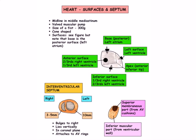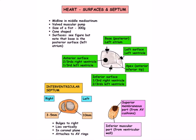The heart is a midline valvular muscular pump which is cone-shaped, about the size of a fist. It weighs about 300 grams in an adult and lies in the middle mediastinum of the thorax, as described in the last podcast. It has an inferior or diaphragmatic surface that sits on the central tendon of the diaphragm.